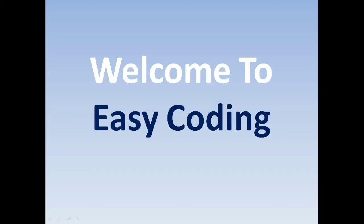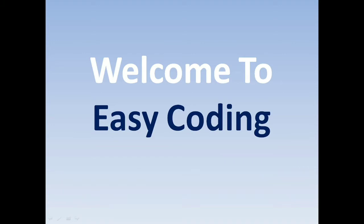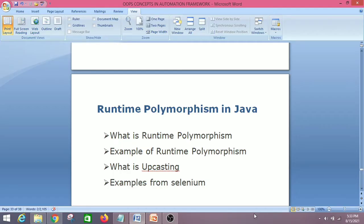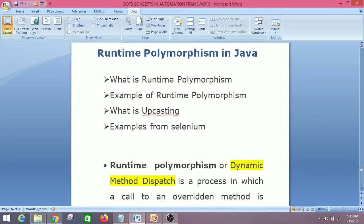Welcome back to Easy Coding. Today we are going to discuss runtime polymorphism. We have discussed overriding and overloading concepts in the previous session. The points we'll cover today are: what is runtime polymorphism, examples of runtime polymorphism, what is upcasting, and examples from the Selenium framework. Let's move on to the first concept — runtime polymorphism, also known as dynamic method dispatch.